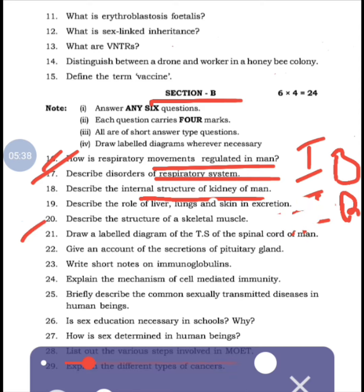Twentieth: Describe the role of liver, lungs and skin in excretion. Twenty-first: Draw a labeled diagram of the TS of spinal cord of man - from neural control and coordination, 3B. Twenty-second: Give an account of the secretions of pituitary gland - from endocrine system, 4A. Twenty-third: Write short notes on immunoglobulins - from immune system, 4B.